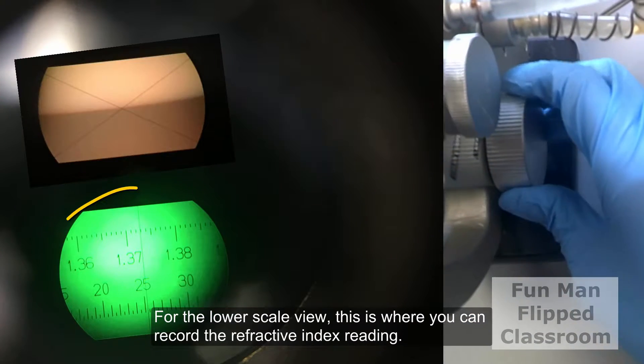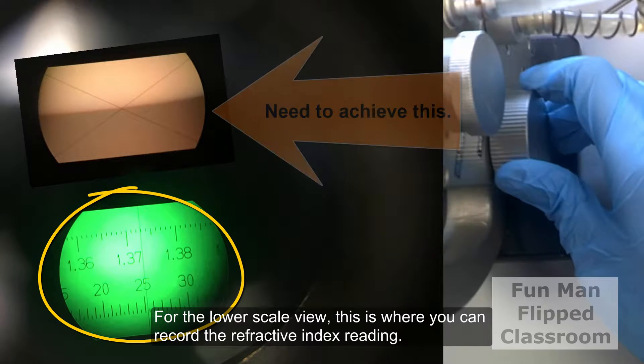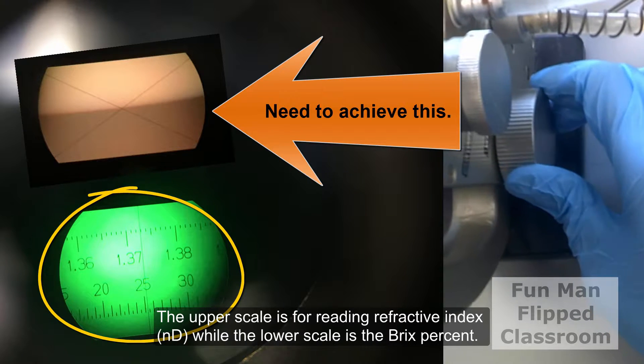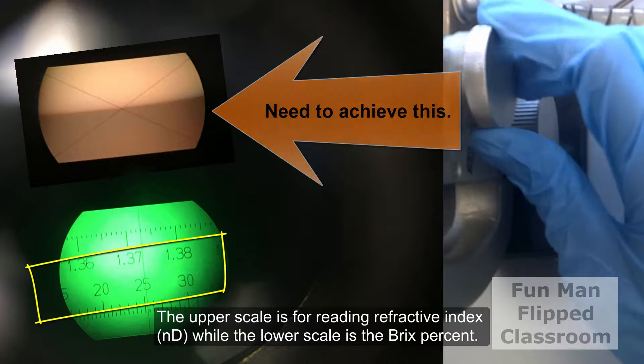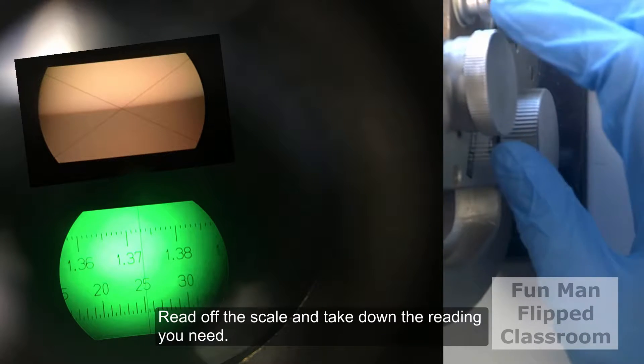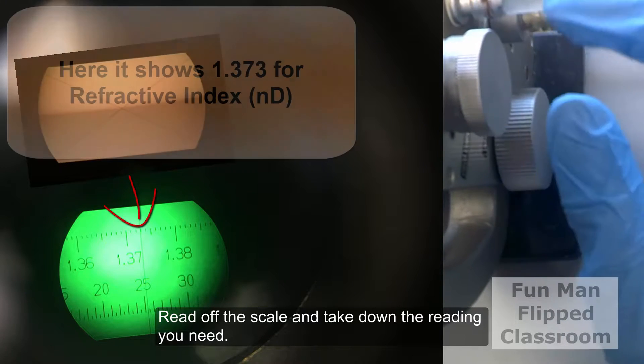For the lower scale view, this is where you can record the refractive index reading. The upper scale is for reading refractive index, while the lower scale is for the Brix percent. Read off the scale and take down the reading you need. That's it!